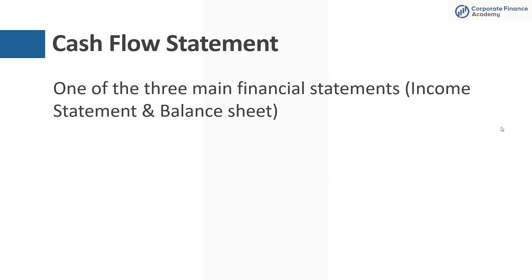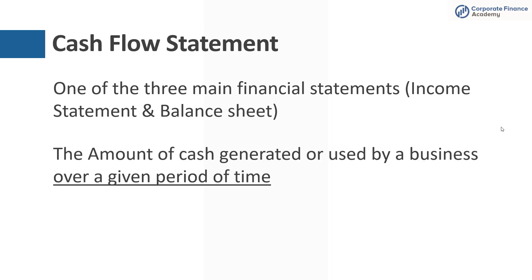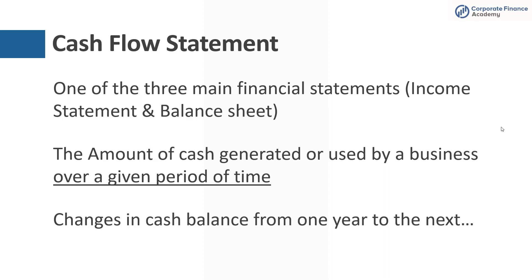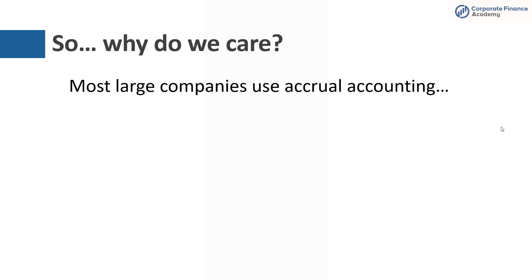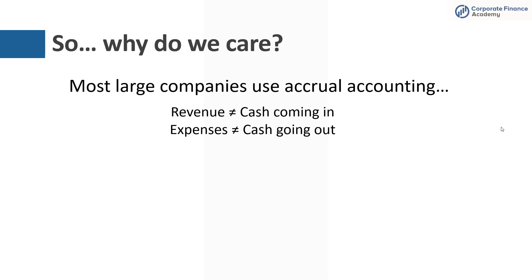The cash flow statement is one of the three main financial statements, along with the income statement and the balance sheet. It shows the amount of cash generated or used by a business over a given period of time, and it shows you the changes in cash balance from one year to the next. Most large companies use accrual accounting, so revenue does not necessarily equal the cash coming in, and expenses do not necessarily show you the cash going out.